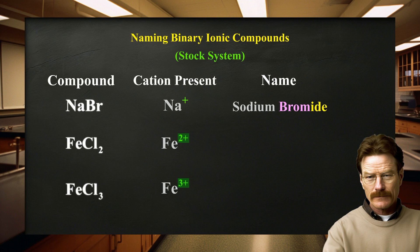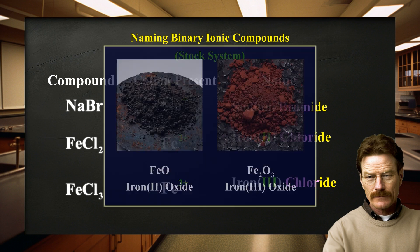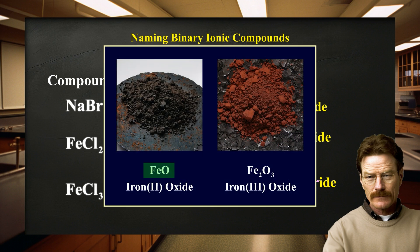In a case such as this, the charge on the metal ion must be specified. The systematic names for these two iron compounds are iron(2) chloride and iron(3) chloride, respectively, where the Roman numeral in parentheses indicates the charge of the cation. Ions of the same element that have different charges have different properties, such as different colors. For example, iron(2) oxide, sometimes used in cosmetics and tattoo inks, and iron(3) oxide, commonly known as rust, have different colors even when they combine with the same anion.